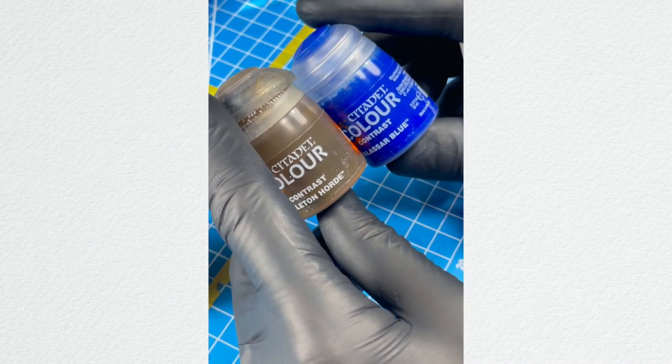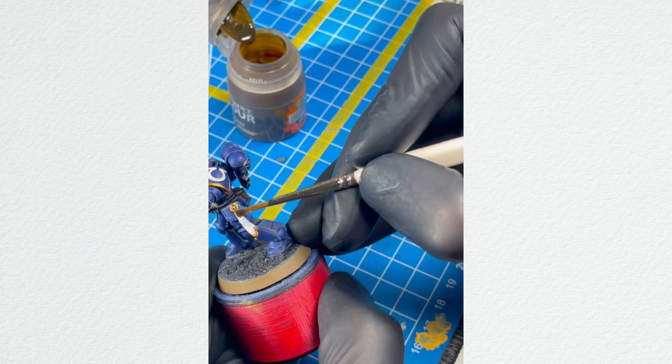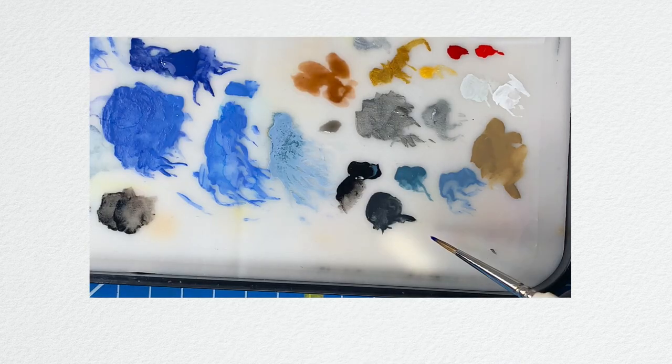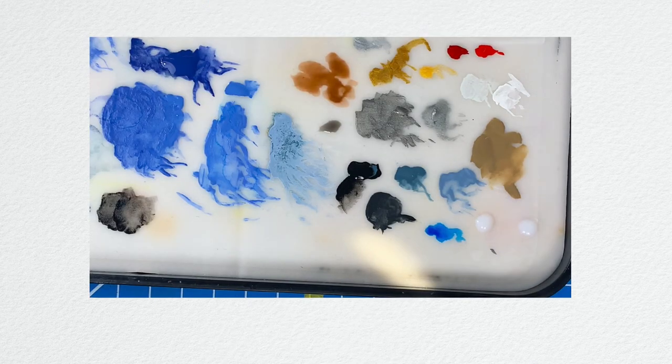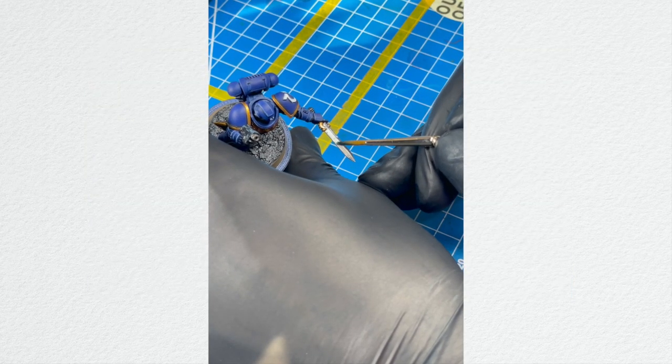Okay, now it's time for final touches. Let's grab your contrast paint—it's Talassar Blue and Skeleton Horde Citadel contrast paints. And using the Skeleton Horde, paint the parchment on the purity seal.